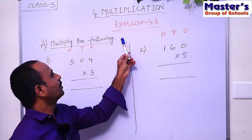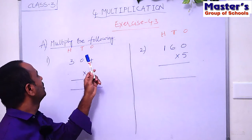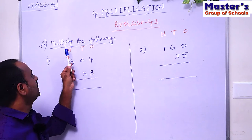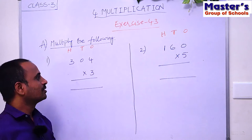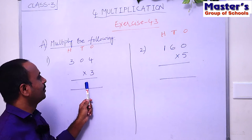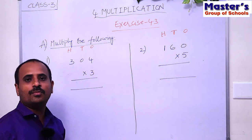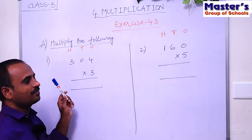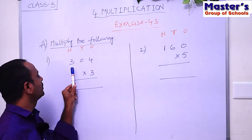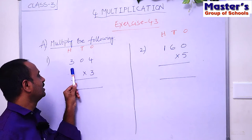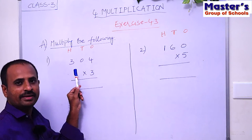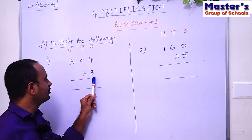Let us go to Exercise 4.3. The first section in this exercise is 'Multiply the following.' There are two problems. We have to multiply these problems. The first problem gives us a three-digit number: 304, and we have to multiply 304 with 3.